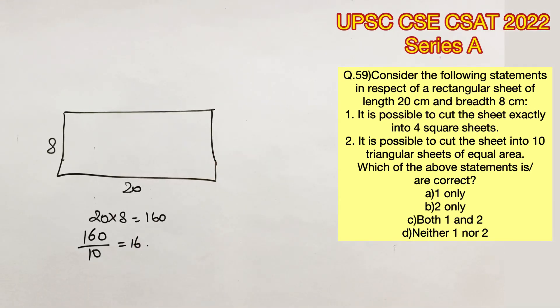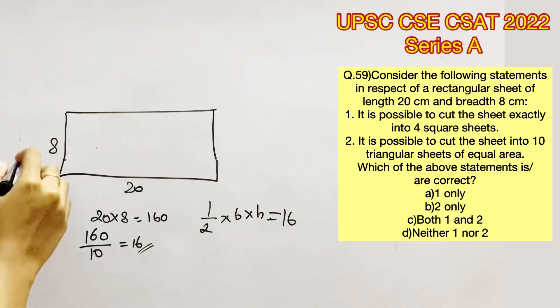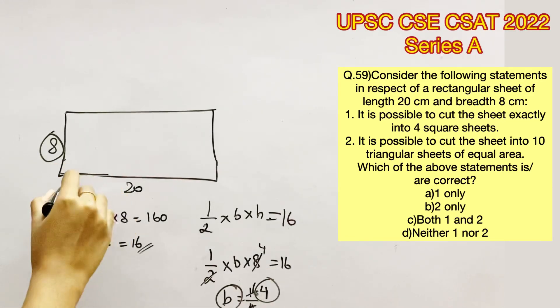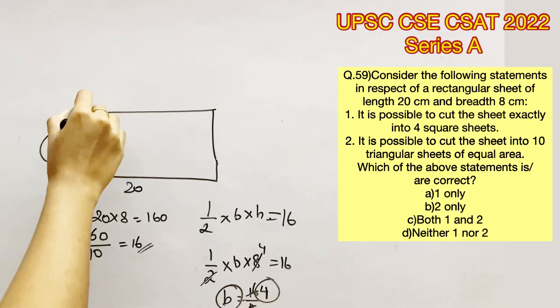So each triangle should be of area 16. We know that the area of the triangle is defined by half into base into height. So now each triangle should be of area 16. Let's consider 8 as the height since it's the edge. So half into base into 8 equals 16. And cancelling it out, we get base as 4. So let's consider the base as 4 here.